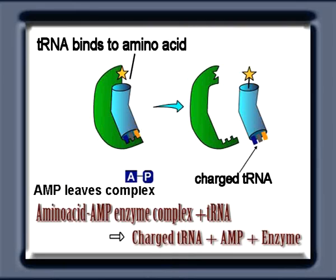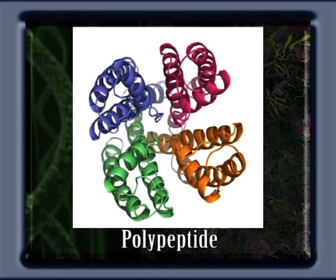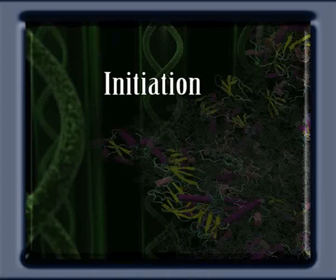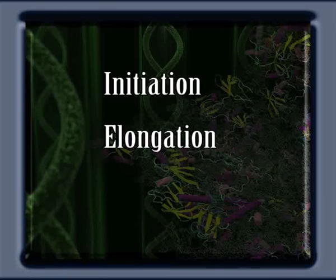The charging of tRNA is highly specific. The synthesis of a polypeptide, which we also call translation, is a continuous process, but for simplicity it is divided into three distinct steps: number one, initiation; number two, elongation; and number three, termination.